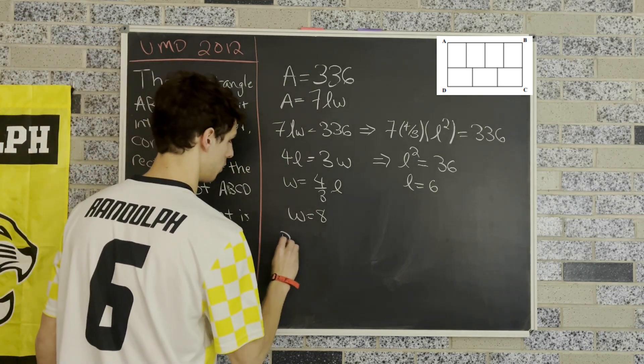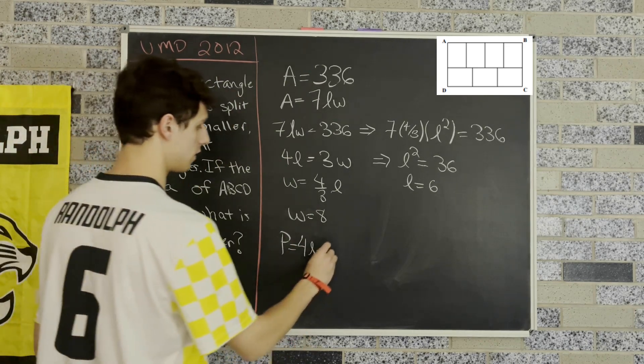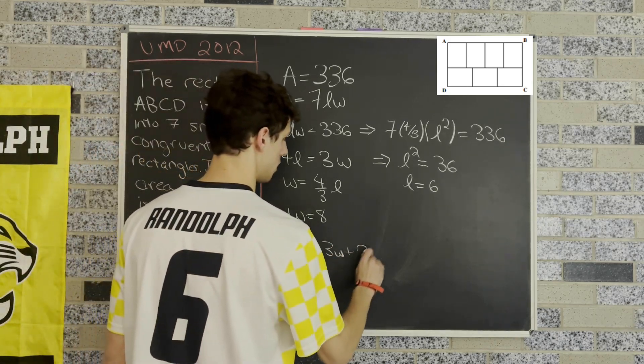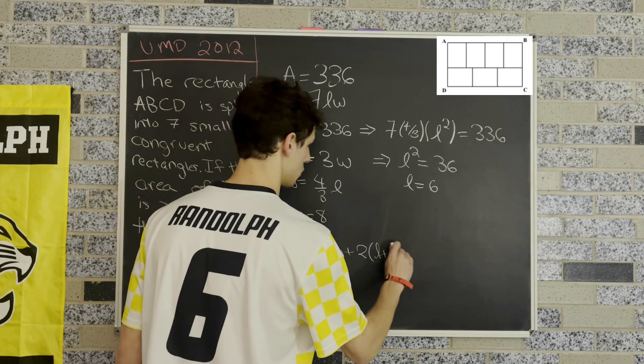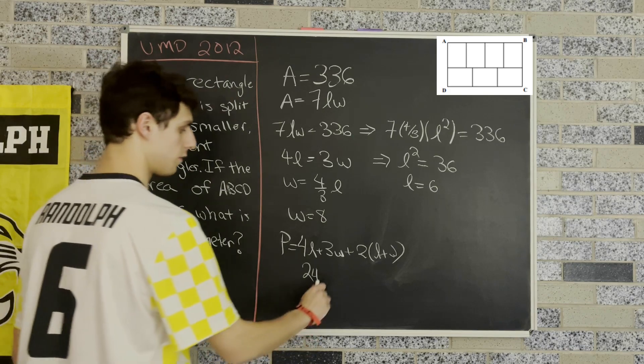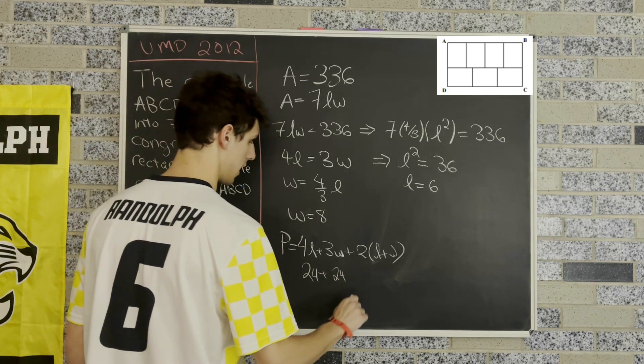Now we can find our perimeter from four length plus three width. That's from the top plus the bottom, plus two times length plus width. Four times length is 24. Three times width is 24. That makes sense - that was our condition that they had to be equal.